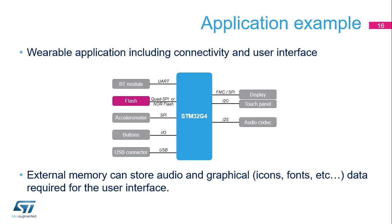Wearable applications require low-power management together with a high-quality user interface. This can be achieved using the STM32G4 FMC to connect the display, thanks to its flexibility and widely programmable parameters to interface with LCD modules. In addition, the FMC or Quad SPI interface may be used to access an external Flash memory containing graphical content such as background images, high-resolution icons, or fonts to support multiple languages. Additional audio data for ringtones can also benefit from the large space offered by the external Flash memory. Thank you.